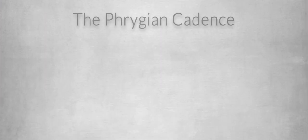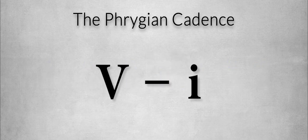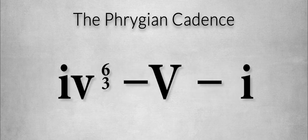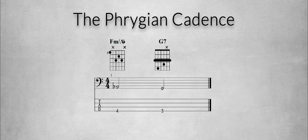The Phrygian cadence is an imperfect cadence that ends on the dominant fifth degree. It's in a minor key, and it's all about the inversion of the fourth degree — the inversion of the subdominant. In the Phrygian cadence, the dominant fifth degree is preceded by the first inversion of that fourth degree. The Phrygian aspect is the half step between the bass note of the inverted fourth degree and the bass note of the dominant fifth degree, giving that Phrygian sound — the dominant chord is approached from a semitone above.